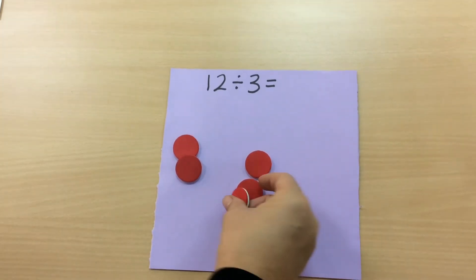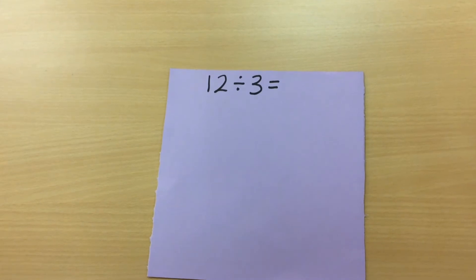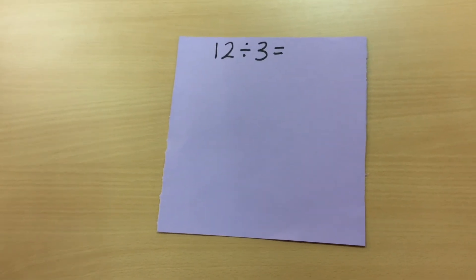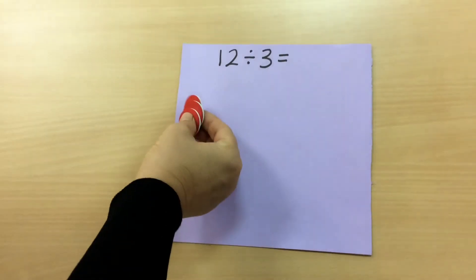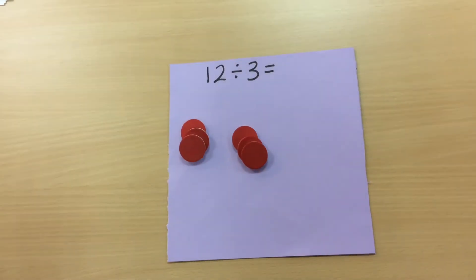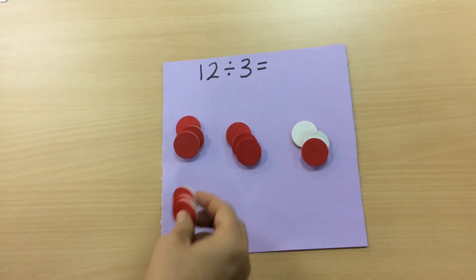But we are now looking at linking the division to the multiplication tables. So in this case, 12 divided by 3, we would put things into groups of three. So we'd have three, three, three, and three.